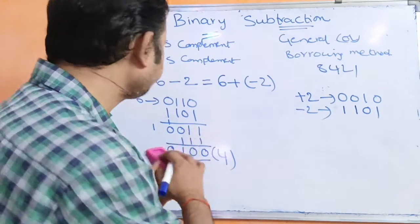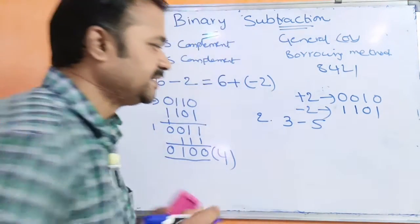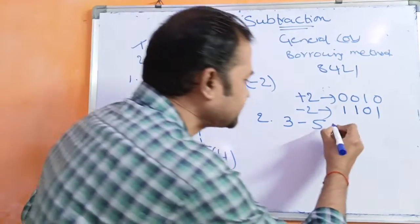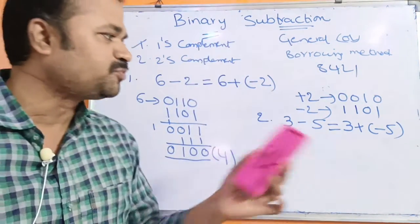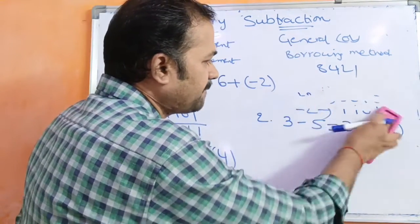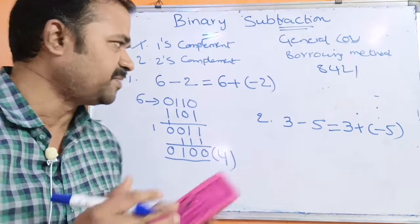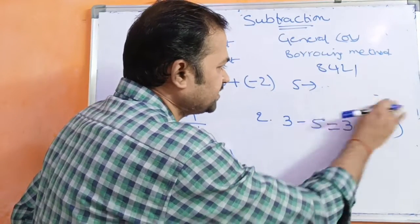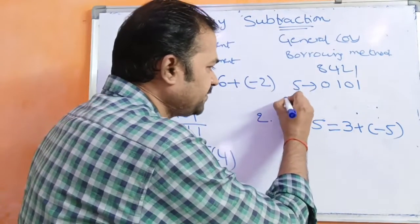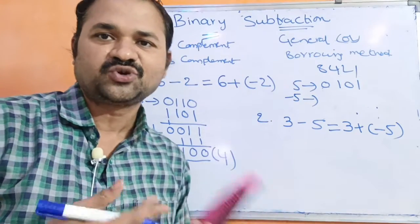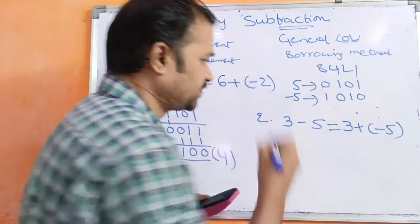Now let us see another example: 3 minus 5. So 3 minus 5 means we have to add 3 and minus 5. First we have to represent minus 5 in one's complement notation, because here the first approach is one's complement. How to represent 5 in binary notation? 0, 1, 0, 1. So for minus 5, convert zeros into ones and ones into zeros: 1, 0, 1, 0.